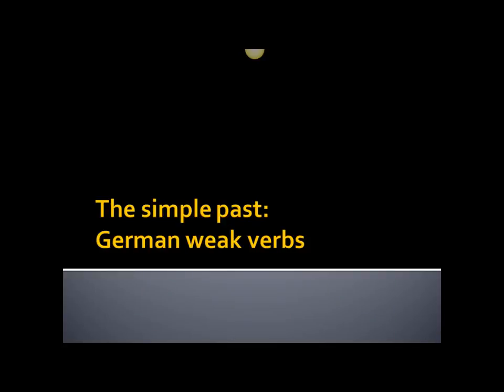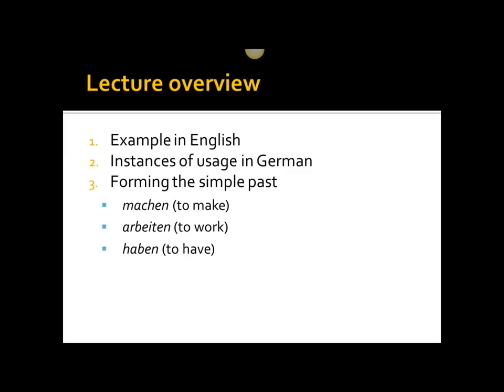Today we're going to be looking at the simple past, how it's formed in German, how it's used in German. To simplify our discussion a bit, we're going to be looking specifically at German weak verbs. Other presentations I'm going to be doing in the near future will be looking at irregular verbs and strong verbs, but today we're focusing specifically on German weak verbs.